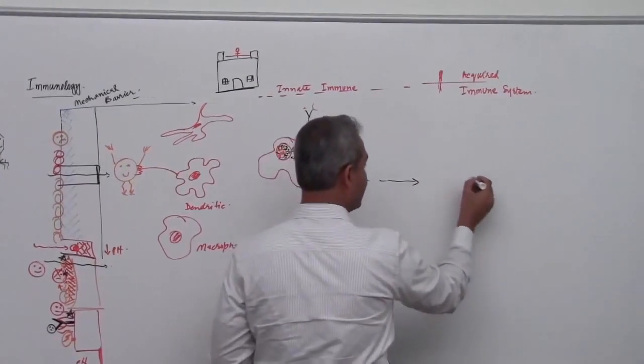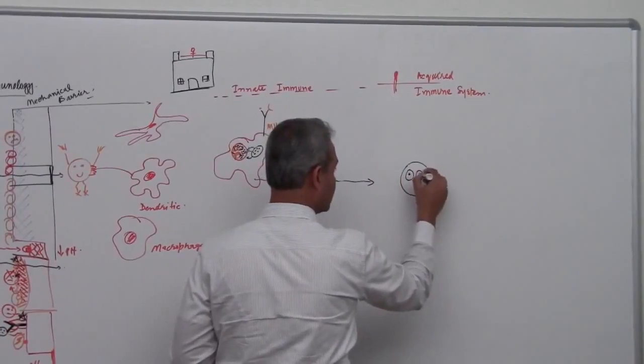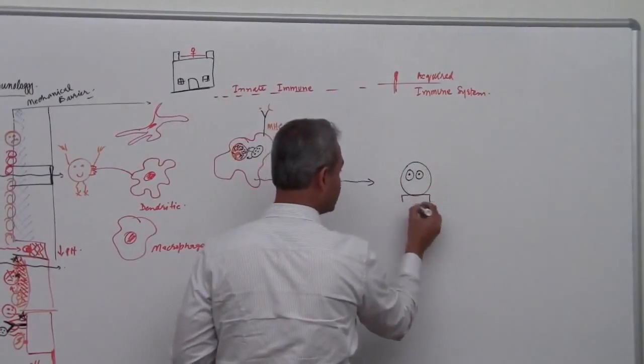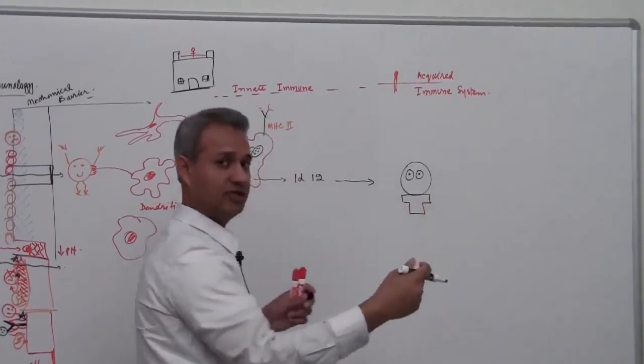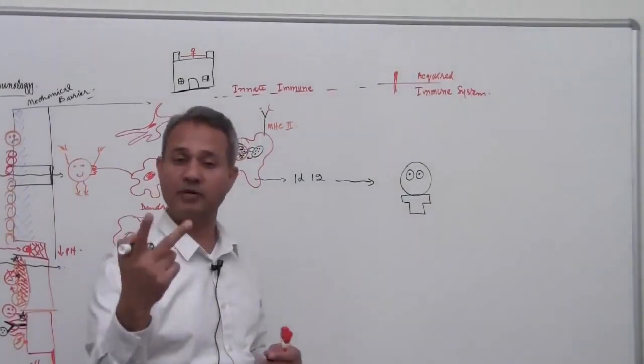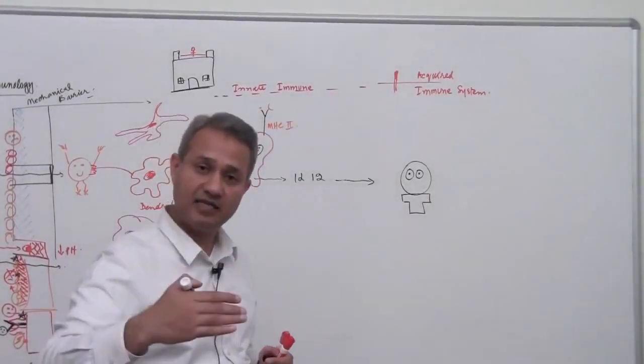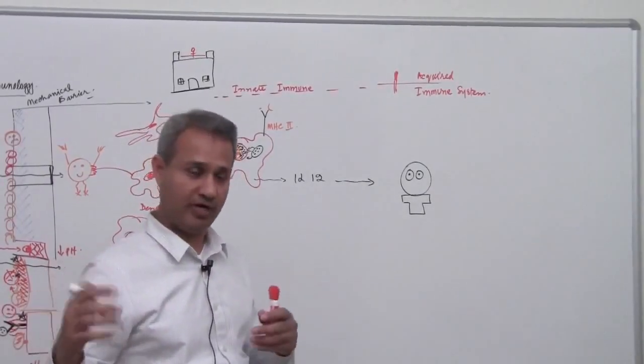And over there let's say we have this really fun looking T cell. So I made this T over here to say it is a T cell. So we will talk about it that acquired cells have two primary types of cells, T cells for thymus and B cells for bursa or for bone marrow.